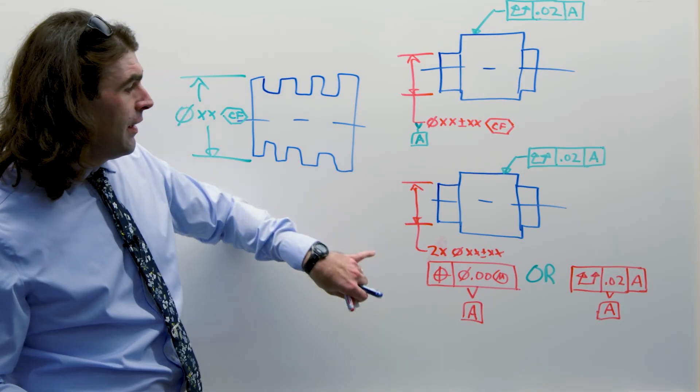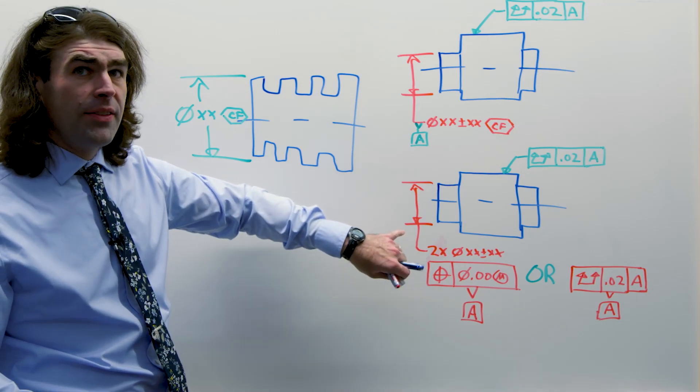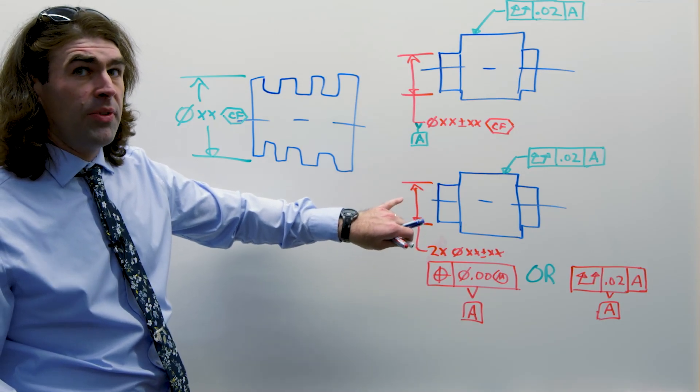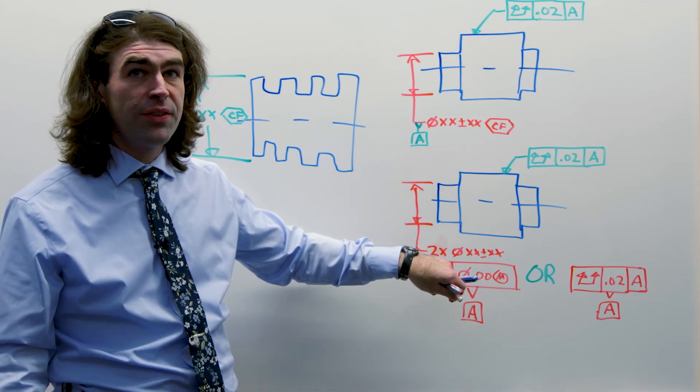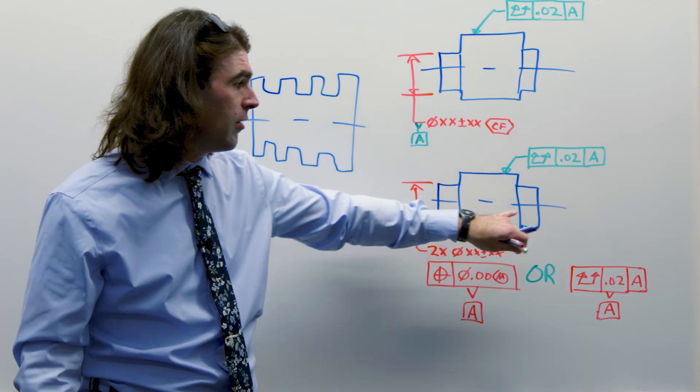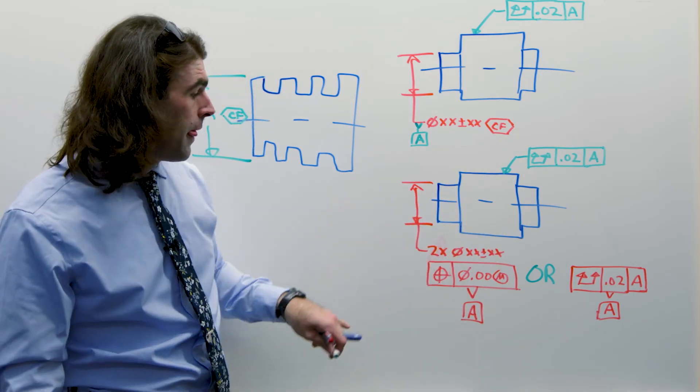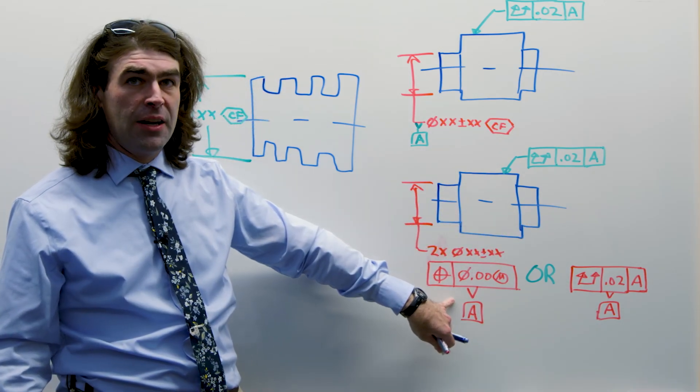Okay. Next up, say we didn't want to do datums A and B. We just want one. We can say two times whatever this diameter is. So we're applied here and on this side. And we're going to make that the datum.